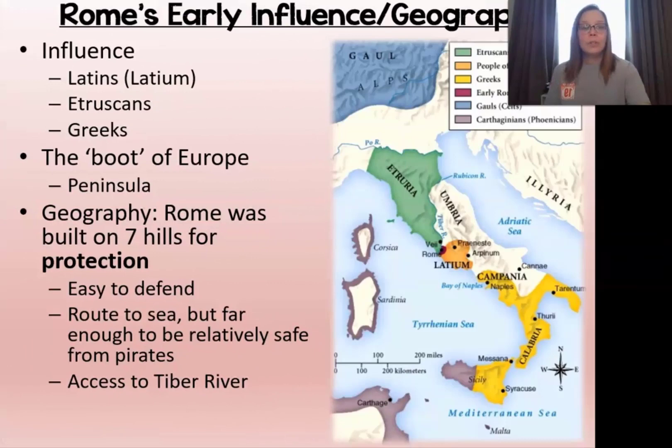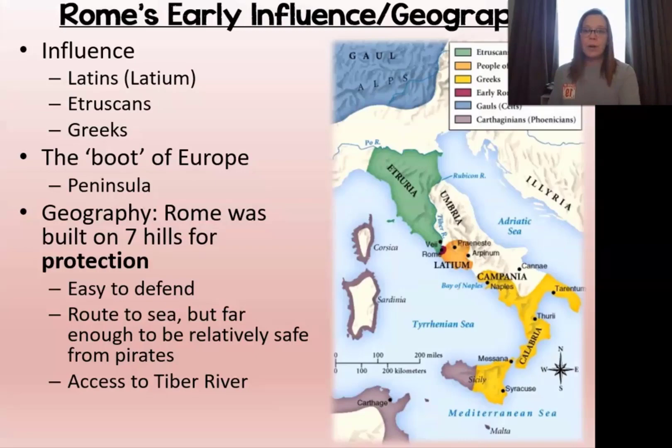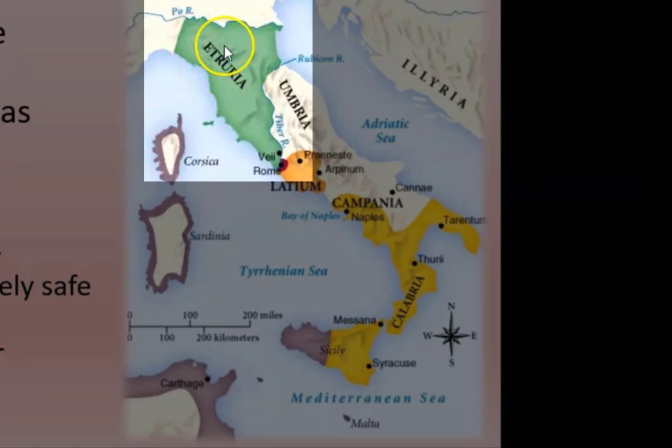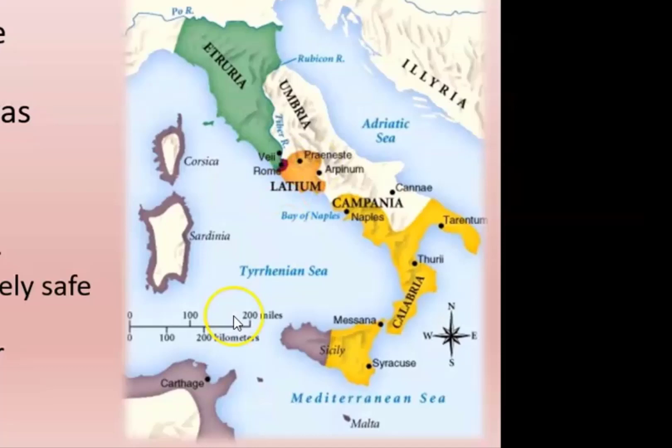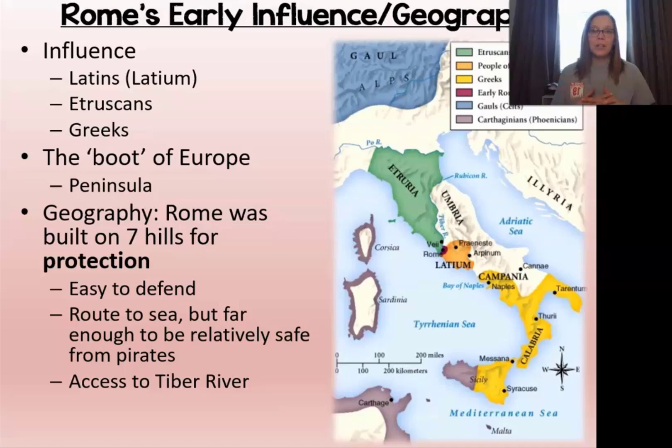First, let's talk about Rome's early influence and geography. The Romans were influenced by many other cultures around them including the Latins, the Etruscans, and the Greeks. It makes sense because they're all located near each other — Etruria, the Etruscans, Latium, the Latins — and we know that Greece is also located nearby. So they're interacting quite a bit, and that explains why they incorporate and influence each other so much.